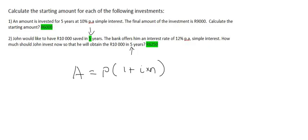John would like to have 10,000 Rand saved in five years. The bank offers him an interest rate of 12%. How much should John invest now so that he will be able to obtain the 10,000 Rand? How much should they invest now so that their money will grow to become 10,000 Rand in five years' time?